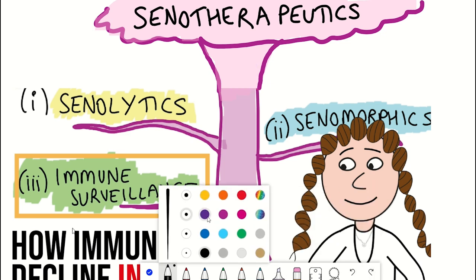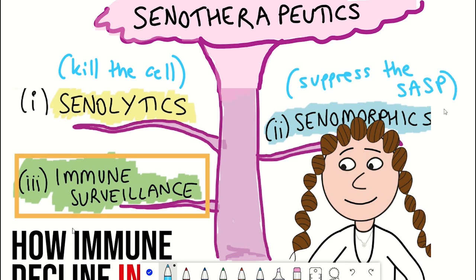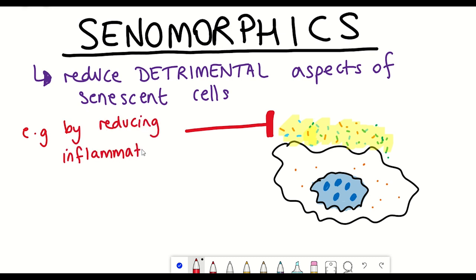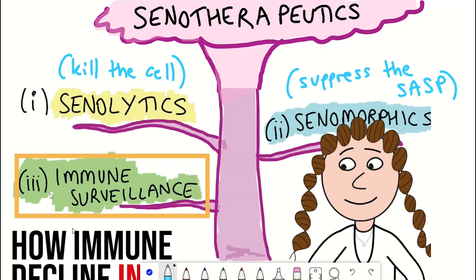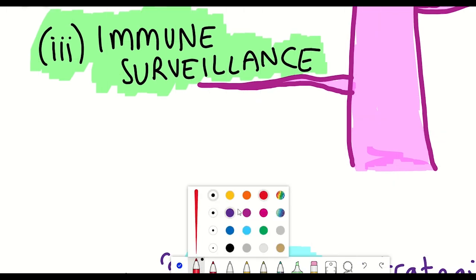The first strategy works by killing senescent cells, referred to as senolytics. The second strategy involves inhibiting the pro-inflammatory secretory phenotype of senescent cells, referred to as senomorphics. And the last approach is to activate our endogenous senolytic system, referred to as immune surveillance.